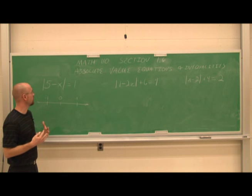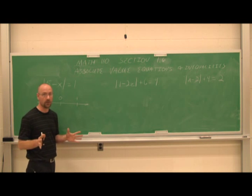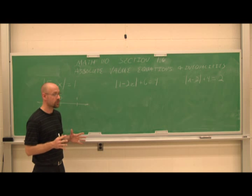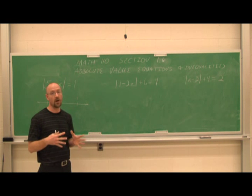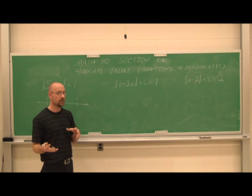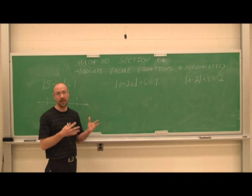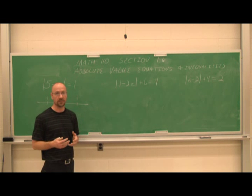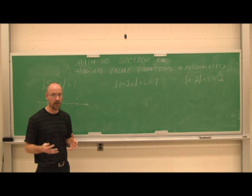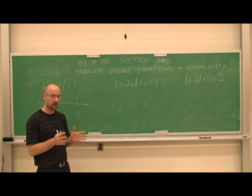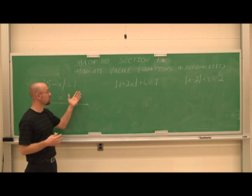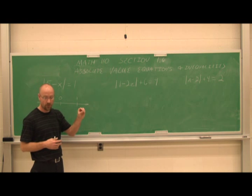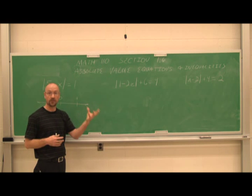First thing we want to define is: what is an absolute value? An absolute value is asking for a distance, and what we know about distances is they're always positive. If someone said travel negative five miles, you'd be asking someone else for directions. Distance is a positive value. So absolute values ask: how far from 0?